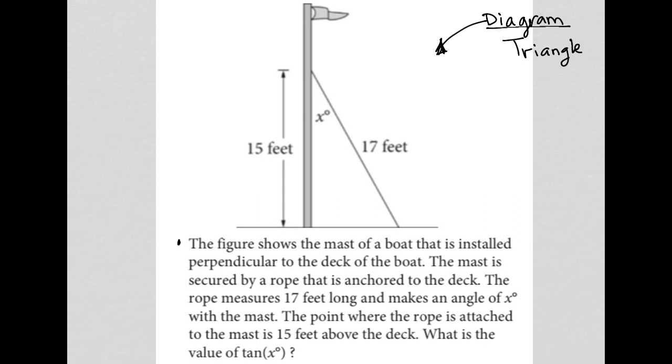So the question says, the figure shows the mast of a boat that is installed perpendicular to the deck of the boat. The mast is secured by a rope that is anchored to the deck. The rope measures 17 feet long. So we see that. Here's our rope and makes an angle of X degrees with the mast. So here's our X degree angle. The point where the rope is attached to the mast is 15 feet above deck. So we see that.